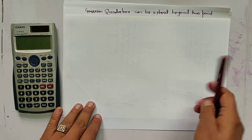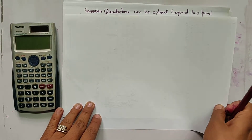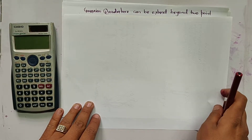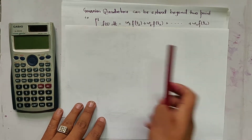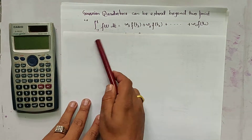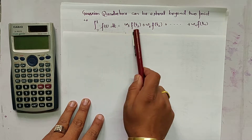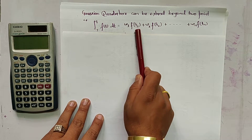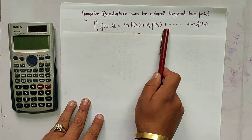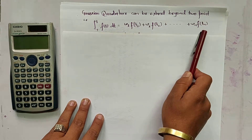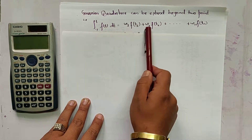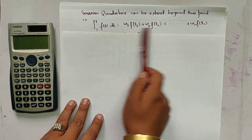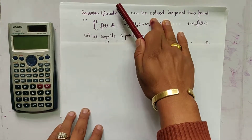In the previous video, I derived the equation for the Gaussian two-point form. Now, for the n-point form, it is written as the integral from minus 1 to 1 of f(t) dt equals w1·f(t1) plus w2·f(t2) plus ... plus wn·f(tn). This constant can be written as x1 or y1 as per your preference.